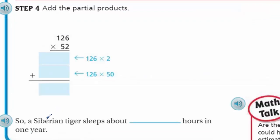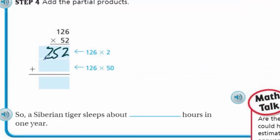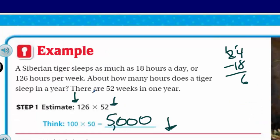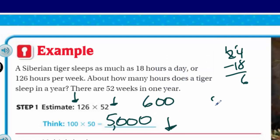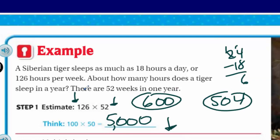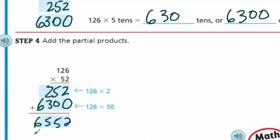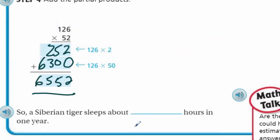Now we add the partial products. We had 252 and 6,300, and that gives us 6,552. Our answer is actually larger than the estimate of 5,000 — and that makes sense because we rounded both factors down, so the estimate was lower. Compare this to the previous page where we rounded up and got an estimate of 600 with an actual answer of 504. This is the opposite: when you round down, your actual answer should be higher. And indeed it is — 6,552. So a Siberian tiger sleeps about 6,552 hours in one year.